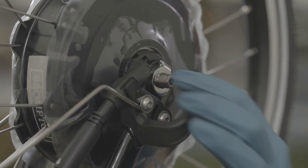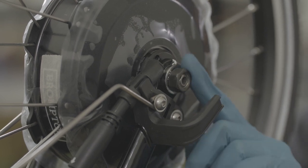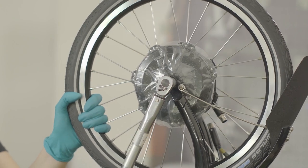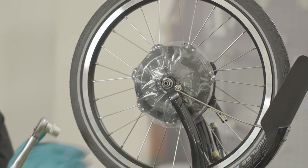Fit the tab washers and the nuts by hand. Then tighten both nuts to 18Nm using the torque wrench and 15mm socket.